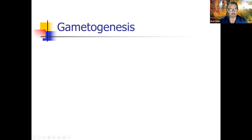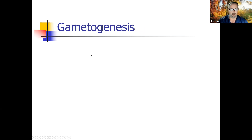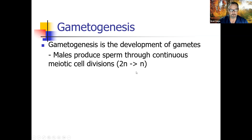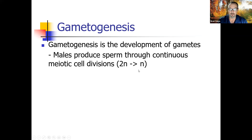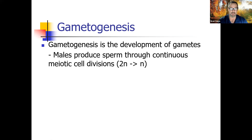Gametogenesis means gamete genesis — the creation and development of new gametes. Males produce sperm through continuous meiotic divisions. Meiosis is the process where we take cells and cut the total chromosomes in half from 2N (diploid) to 1N (haploid). Why cut chromosomes in half? Because it takes two parents to make a baby — I can only give half my chromosomes to my kid, and the other parent gives half as well, ending up with a full set. I can't give all my chromosomes or the child would have double what they're supposed to have.